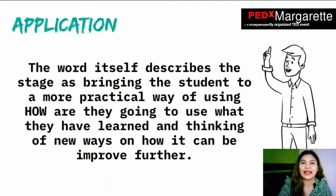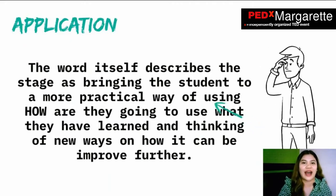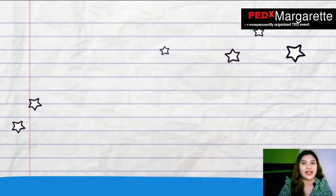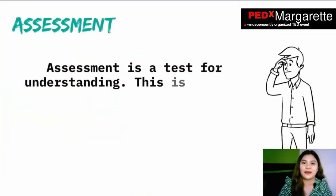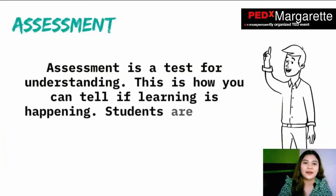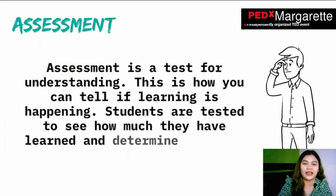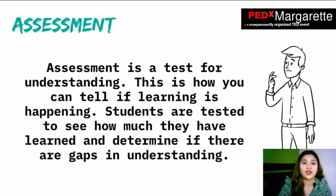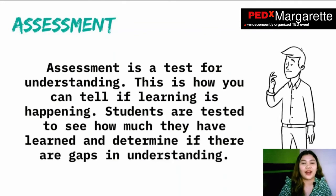This is a 4A's or 5A's teaching model, and the fifth A we are adding is assessment — assessment for learning, assessment of learning, and assessment as learning. Assessment is a test or understanding of how you can tell if learning is happening. Students are tested to see how much they have learned and to determine if there are gaps in understanding.